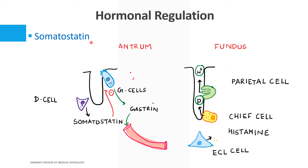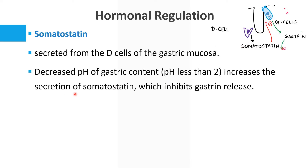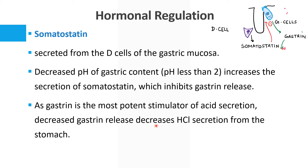Somatostatin is secreted by the D cells — the delta cells — present in the pyloric glands. Somatostatin inhibits the G cells, leading to decreased gastrin and decreased gastric acid production. This is how somatostatin acts on gastric secretion and decreases it.